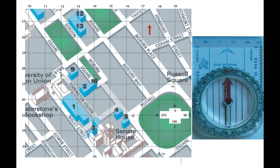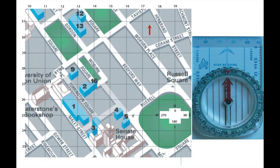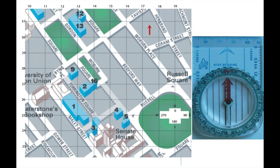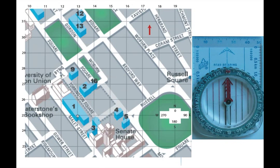So if we were to try and locate the point of Birkbeck College, what we need to do is think about the Eastings first and then the Northings. The Eastings: we go from 10, 11, 12, 13 — so it's 13. And for the Northings, we've got to go up to 25. So the grid reference for that point is 130250. Very easy when you have a crossover between the Eastings and the Northings.